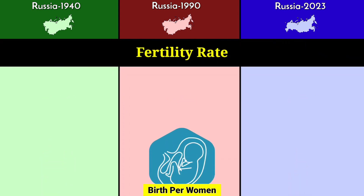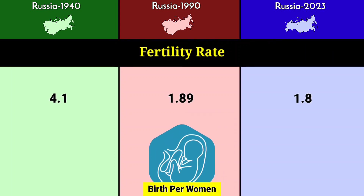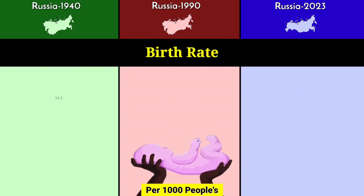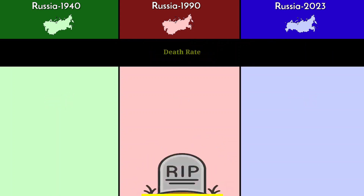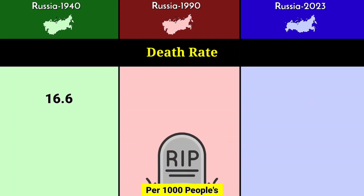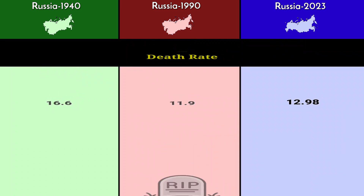Fertility rate: 4.1 in 1940, 1.89 in 1990, and 1.8 in 2023. Birth rate: 24.5 in 1940, 14 in 1990, and 11.6 in 2023. Death rate: 16.6 in 1940, 11.9 in 1990, and 12.98 in 2023.